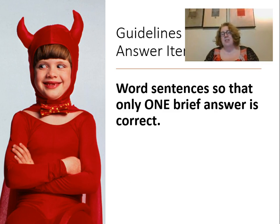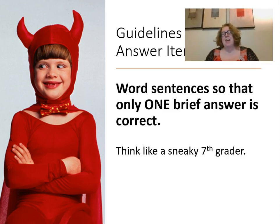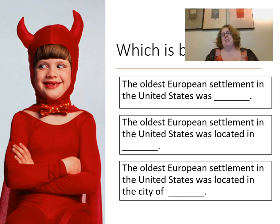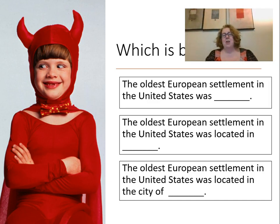Make sure there is only one brief correct answer. I always like to say you should answer your questions like a sneaky seventh grader — think about how the most sarcastic, sneaky kid would answer in a way that's technically correct even though it wasn't the answer you were looking for. For example: 'The oldest European settlement in the United States was blank' — a student could say 'pretty,' 'beautiful,' or 'old,' and all of those would technically be correct.